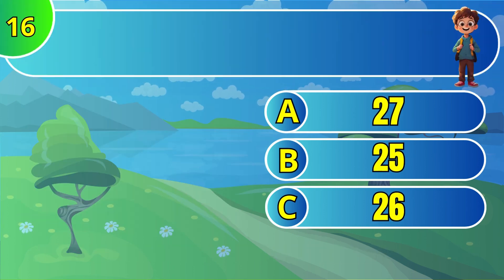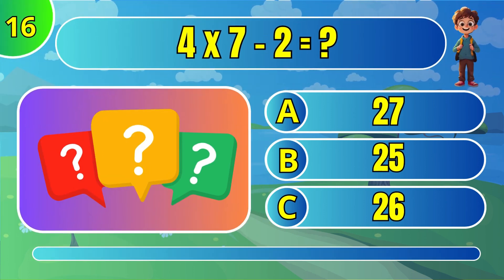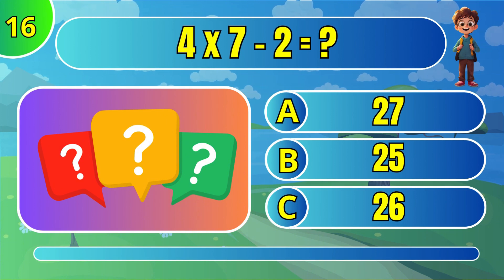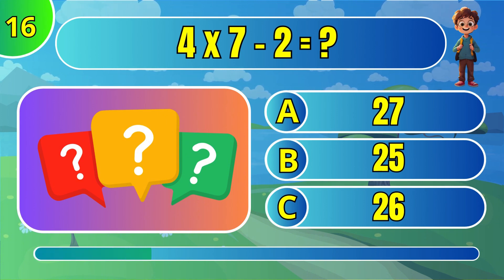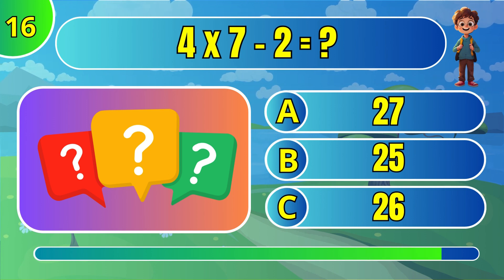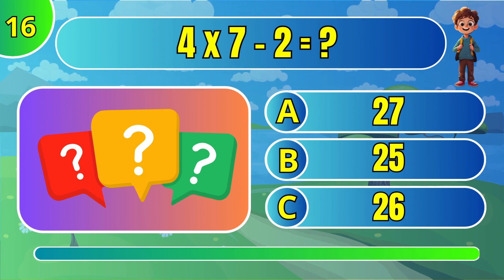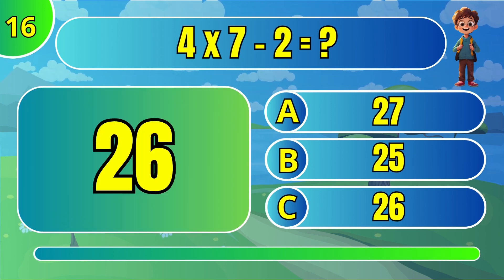What is 4 times 7 minus 7? The answer is C: 21.